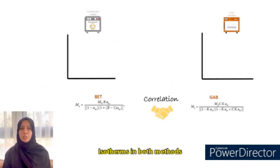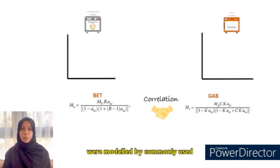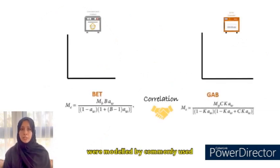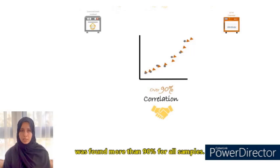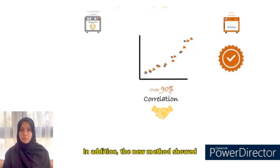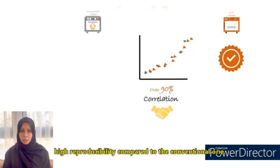Isotherms in both methods were modeled by the commonly used BET and GAP equations. The correlation between the two methods was found to be more than 90 percent for all samples. In addition, the new method showed high reproducibility compared to the conventional one.